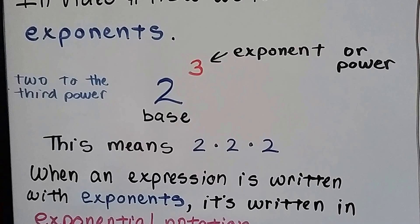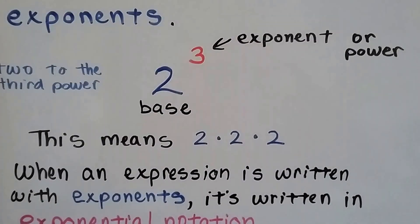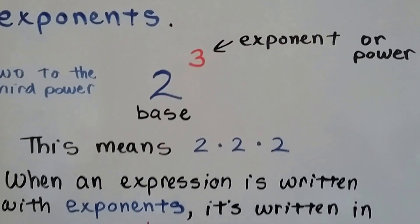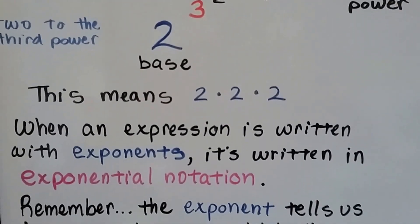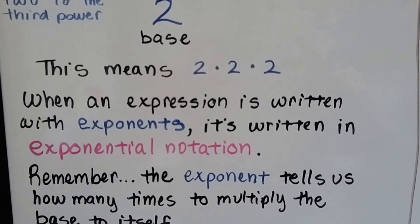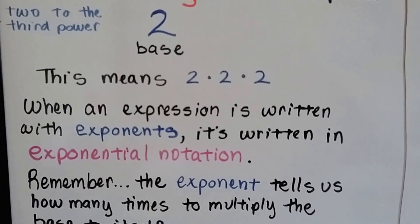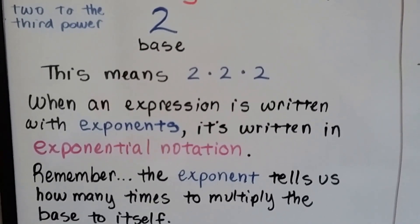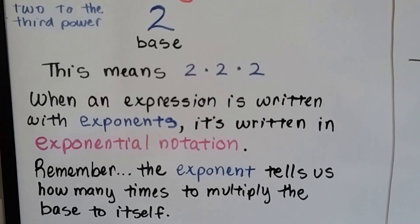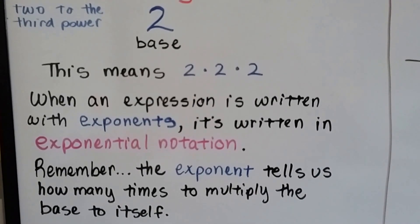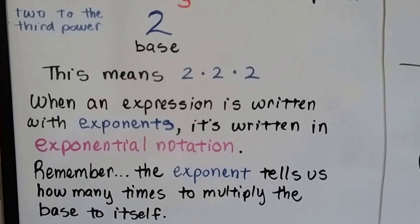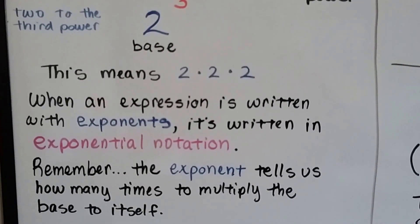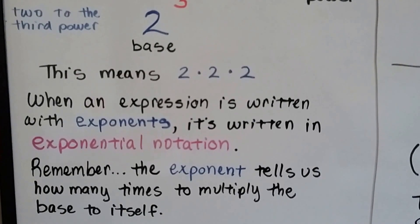This would be read as 2 to the third power. The 2 is the base, and the 3 is the exponent, or power. It means 2 times 2 times 2. When an expression is written with exponents, it's written in exponential notation. Now remember, the exponent tells us how many times to multiply the base to itself. We don't multiply the base to the exponent — that would be wrong. 2 times 2 times 2 is not equal to 2 times 3.